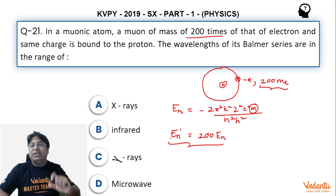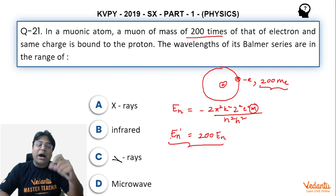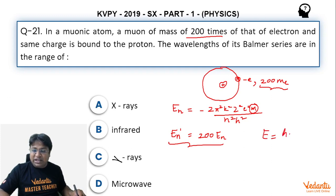So this basically means that the energy of all transitions will go up by a factor of 200. Which also means, like we write energy as hc by lambda, so if energy goes up by a factor of 200, this means that lambda will decrease by a factor of 200.